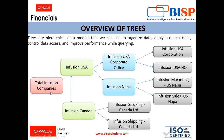Say there is a company called Total Infusion Companies and it has multiple nodes: Infusion USA, Infusion Canada, Infusion USA Corporation, and Infusion USA Headquarters — all six are child nodes of the tree version.